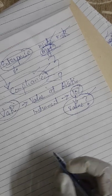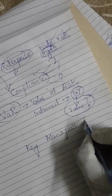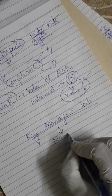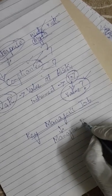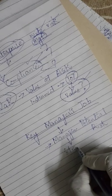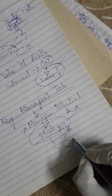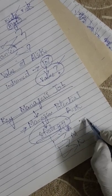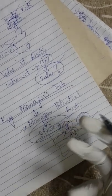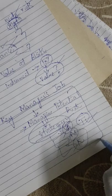Then we have the topic of the key manager's job. In simplest form, the key manager's job is to manage potential risk. They manage it whether through strategy — avoid, mitigate, keep, or transfer. As a financial manager, the job is to manage risk. We are focused on the financial manager specifically and what they are supposed to do with these risks.